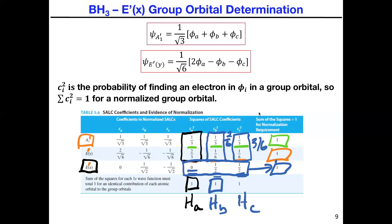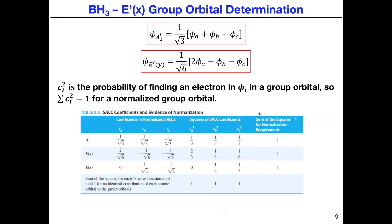Looking at the contributions: 2/3 goes into E'(y), 1/3 goes into A1', and that means zero character of HA is found in the third group orbital. Because we're dealing with the squares, the roots are what we have to deal with in terms of the actual coefficient for the last wave function.